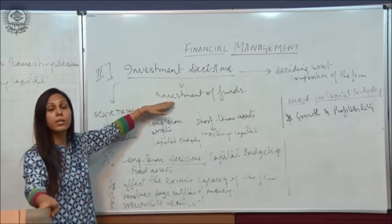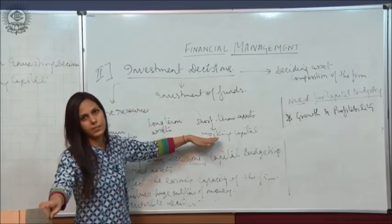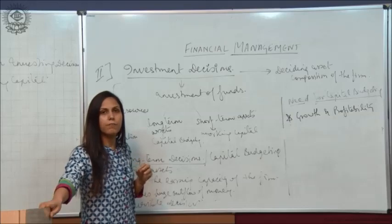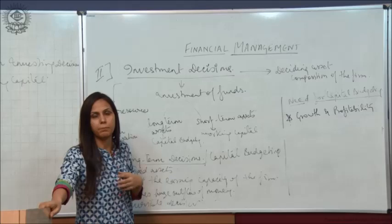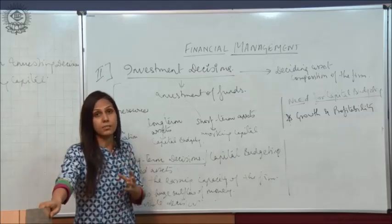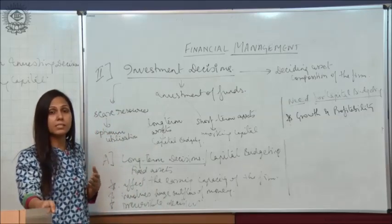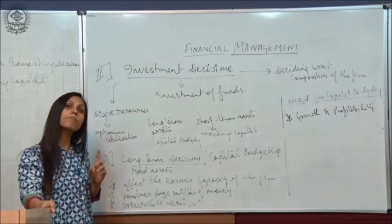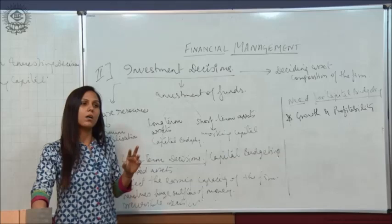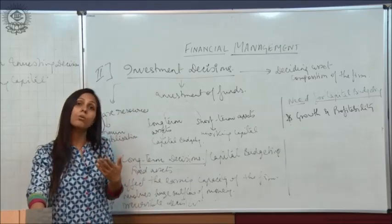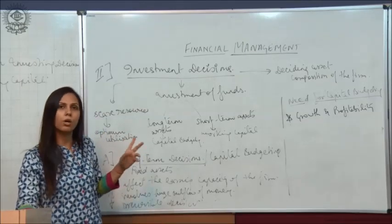Those procured funds can either be invested in long-term assets or short-term assets. When funds are invested in long-term assets, we call it capital budgeting, because we are purchasing fixed assets. Whereas if such money is invested in short-term assets, that is called working capital. Short-term assets are assets which can be easily converted into cash within a year, so they are called short-term assets.